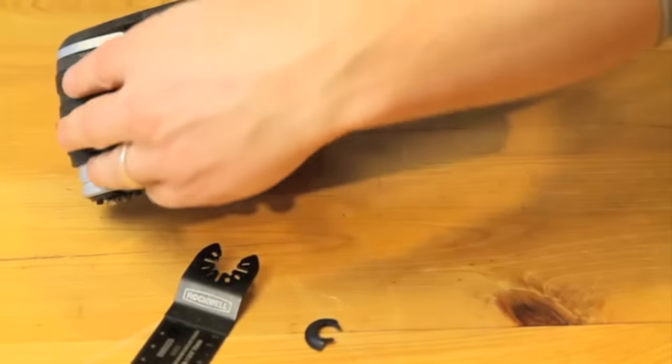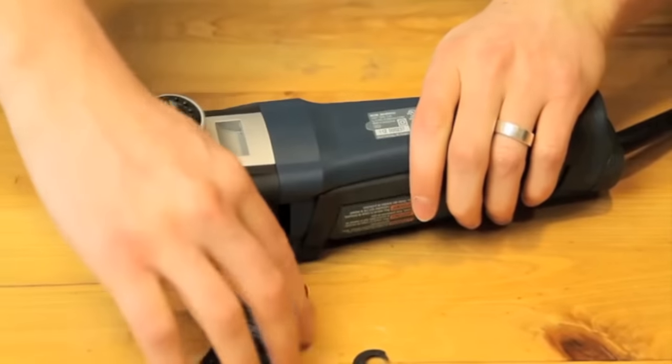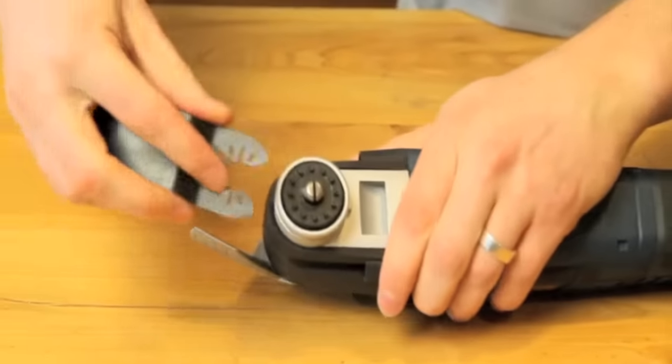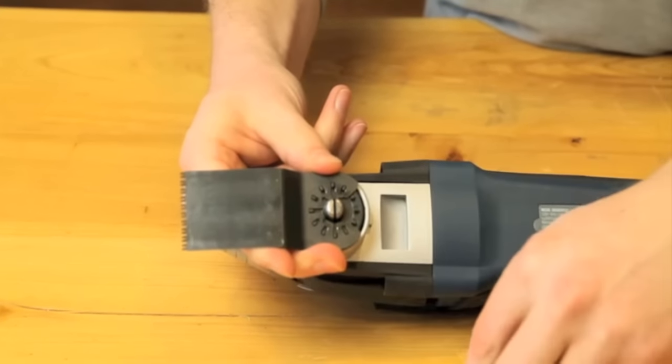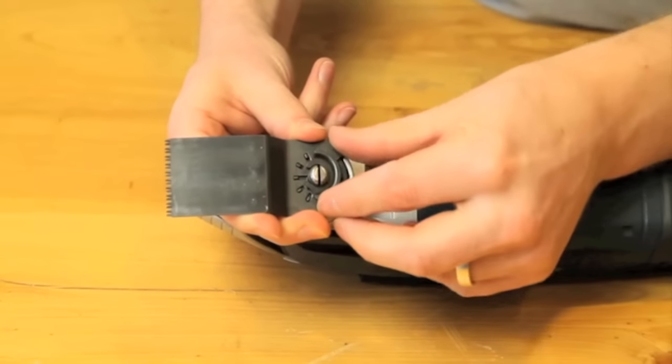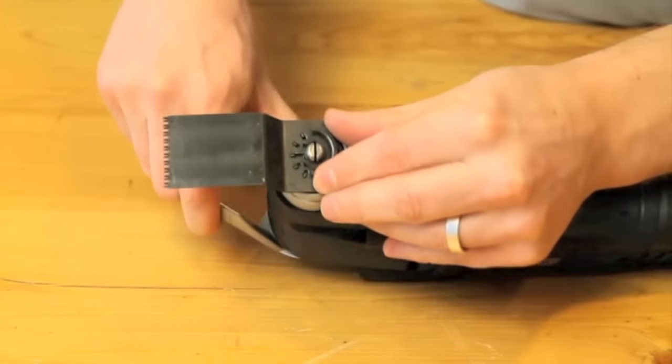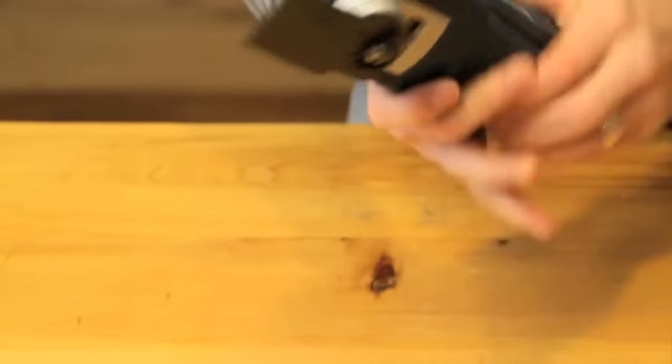We'll show you how easy it is to install the Rockwell universal fit accessories on the Bosch tool. Just loosen up that quick change lever, install your Rockwell accessory under the pins just like you would your Bosch accessories, install that spacer in place for added stability, retighten your lever, and you're good to go ready to make your cut.